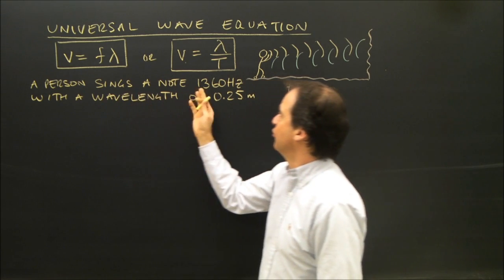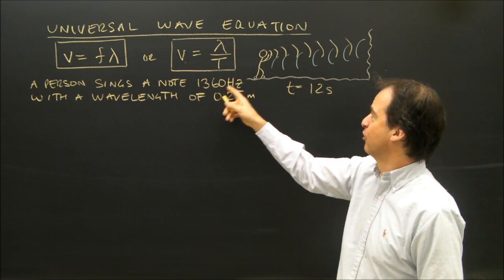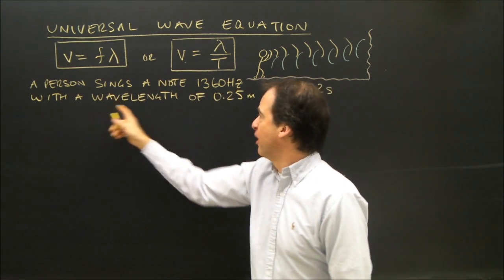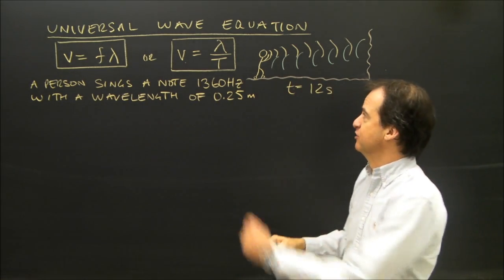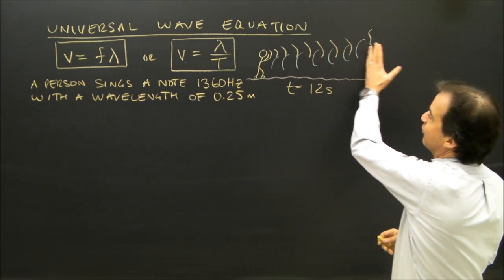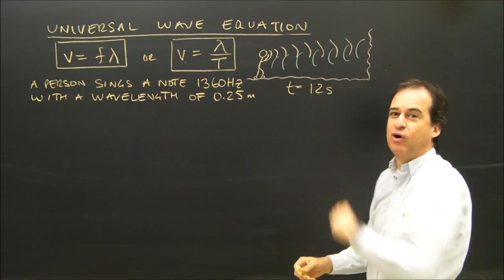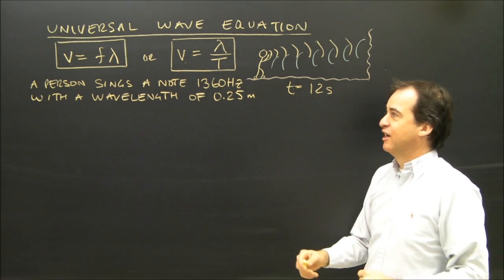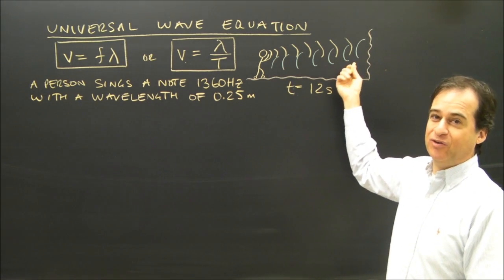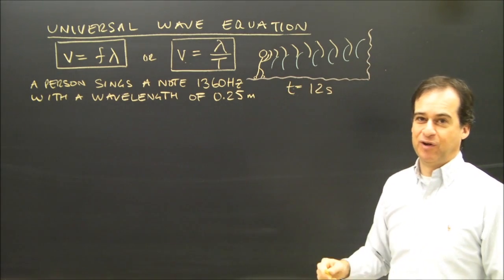A person sings a note of 1316 hertz with a wavelength of 0.25 meters. They sing and hear an echo come back after 12 seconds. The question is: how far away was the mountain that they were getting the reflection from?